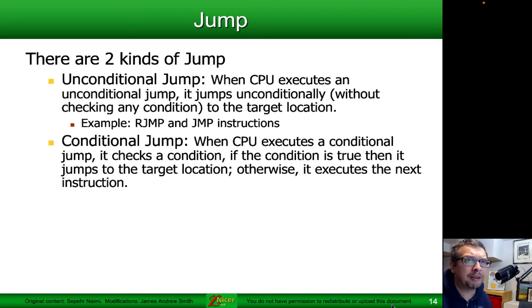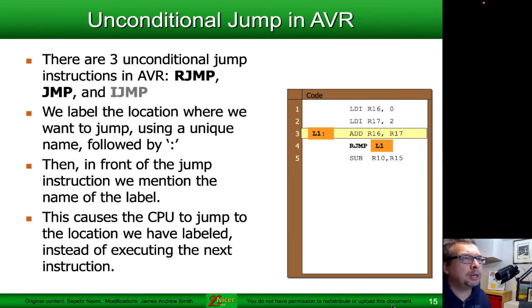Okay, so let's take a look at unconditional jumps with the AVR microcontroller. It doesn't really matter what microprocessor you're dealing with—they all have equivalents to this. There are three unconditional jump instructions with the ATmegas or the AVR microprocessors: RJMP, jump, and indirect jump or IJMP—so relative, regular, and indirect. We label the location where we want to jump using some letters, and we follow that unique name with a colon. That's what we do in assembler code.